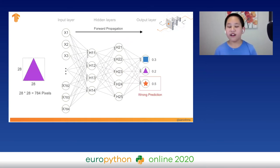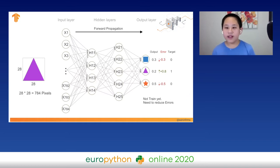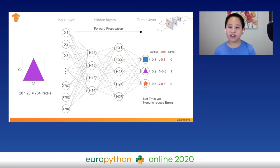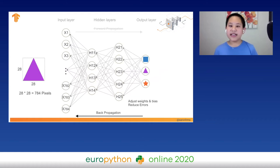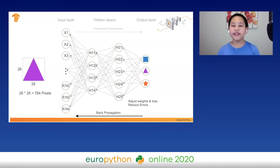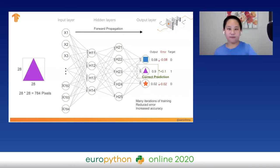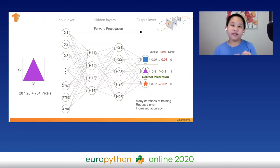When we reach the output layer, we can see we have a wrong prediction — but this is only half the story. This is called forward propagation. Right after forward propagation, we see how much we need to improve: we compare our machine's prediction against the targets and calculate our errors. Now for the other half — back propagation. We go through back propagation, adjusting the weights and biases to reduce the error. After many epochs of forward and back propagation, we eventually have a correct prediction with reduced error and increased accuracy.